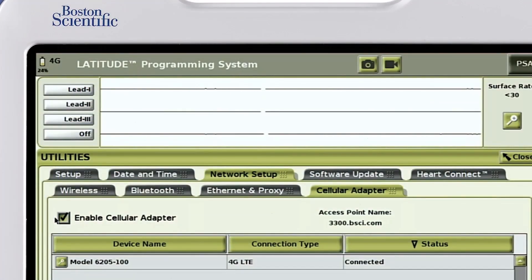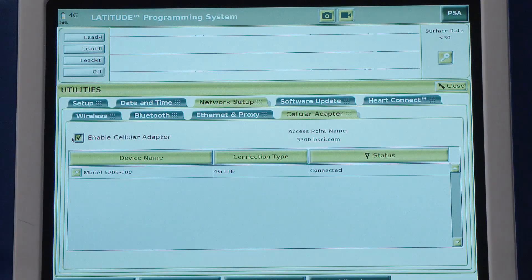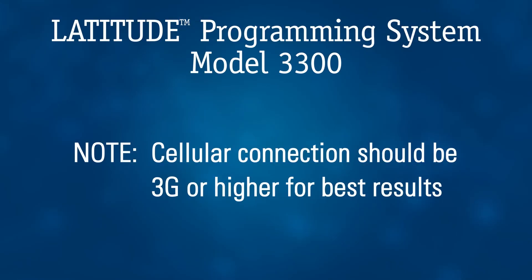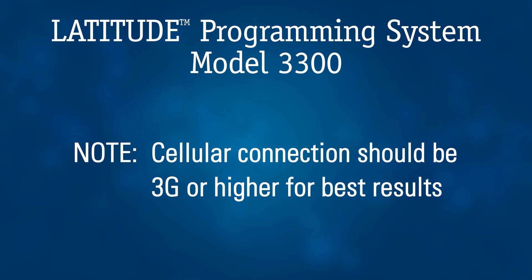The cellular signal strength is shown in the upper left of the programmer screen, and will appear solid once connected. If blinking, the connection is being established. It is important to note that HeartConnect requires a 3G or higher cellular connection. Variations in quality of the cellular signal strength can affect the quality and responsiveness of audio, video, and Model 3300 programmer display information shared in an online meeting.